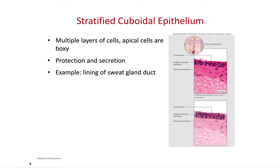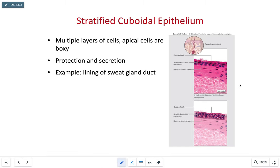The next type is stratified cuboidal epithelial tissue, which has two or more cell layers with cells at the apical surface being cuboidal in shape. Their function is protection and secretion. We find this in the larger ducts of most exocrine glands, such as sweat glands, and in some parts of the male urethra.